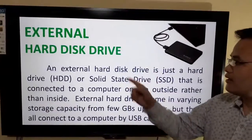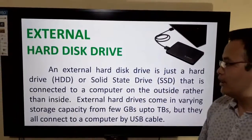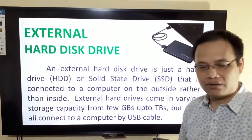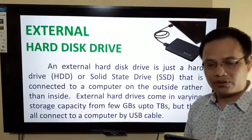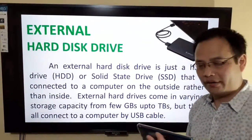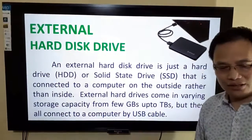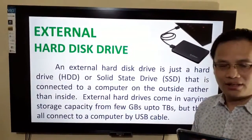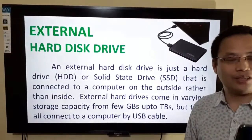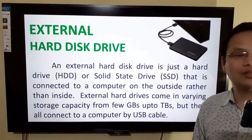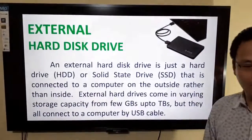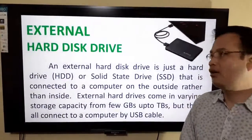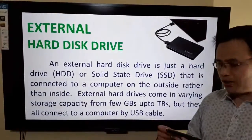Next comes the external hard disk drive. An external hard disk drive is simply a hard drive or solid-state drive (SSD) connected to a computer on the outside rather than inside. External hard drives come in varying storage capacities from 2 GB to 2 TB, and they all connect to a computer by USB cable.